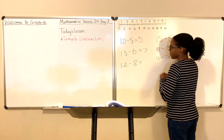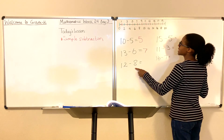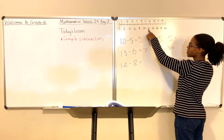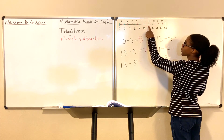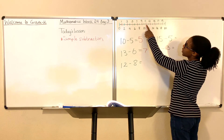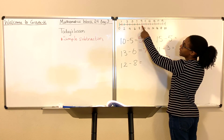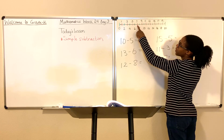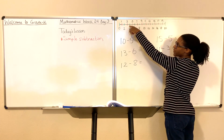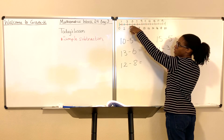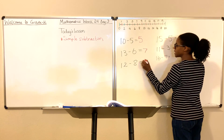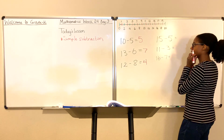12 minus 8. We have 12 minus 8. Here's 12. Now we're going to subtract 8 — we're going to count down 8: 1, 2, 3, 4, 5, 6, 7, 8. Good. We found the number. What number is it? 4. 12 minus 8 is 4.